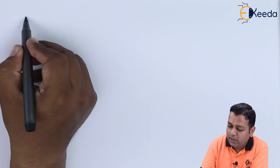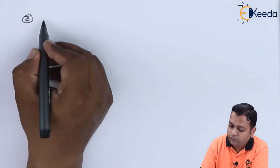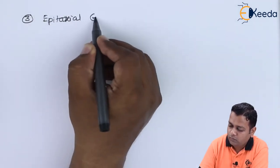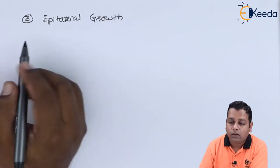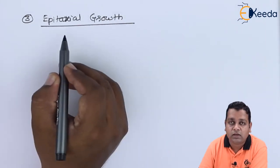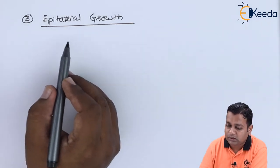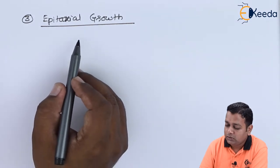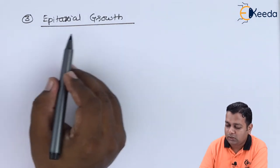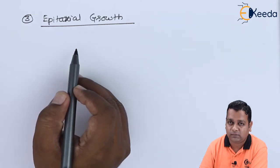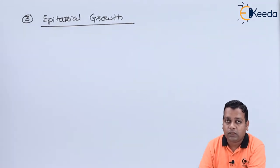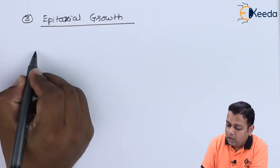Now the third type of techniques for fabrication, so that in turn we can call it to be the MMIC growth, is the epitaxial growth. The single crystal semiconductor material is growing over the single crystal semiconductor substrate here. So the epitaxial growth, the epitaxy basically is of three types.